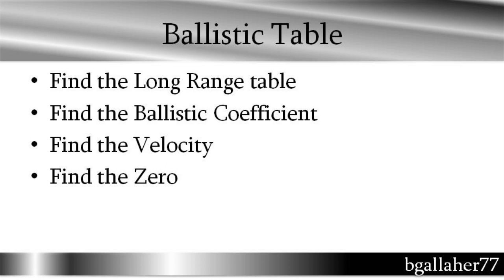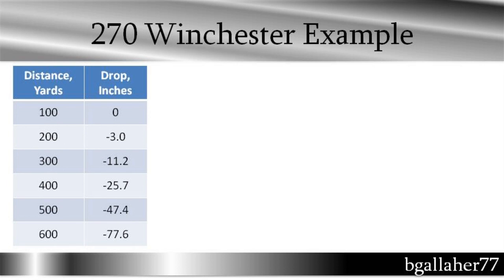With the ballistic table — this is out of a reloading manual — you find the long range table. There are also short range tables, but find the long range table. You find the ballistic coefficient, you find the velocity, and then you find your zero, and there will be a column of numbers. This example is out of the Nosler book: distance in yards from 100 to 600, and then the drop in inches. I have zero drop at 100 yards because I chose to sight my rifle in at 100 yards, then three inches drop at 200 yards, and 11 and a half inches drop at 300 yards. I figure this is acceptable because most of my shots are under 200 yards.